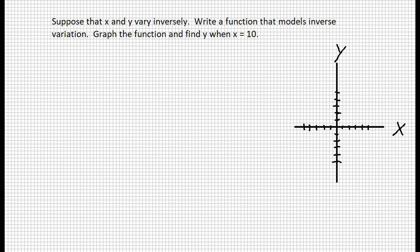All right, we are going to look at a relationship between x and y. We are going to suppose that x and y vary inversely, and we're going to write a function that models inverse variation from a given point. Now, we're going to say that x equals 1.2 when y equals 3.